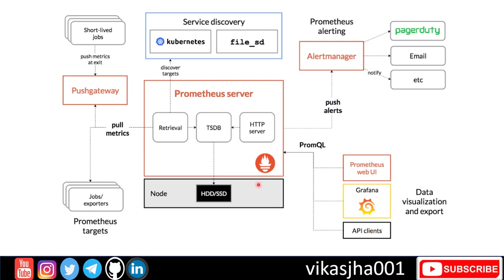Can Prometheus send alerts? Yes — it can send alerts to many different targets such as email, Telegram, PagerDuty, and so on. It uses a component called Alert Manager. When Prometheus identifies a rule or criteria where an alert event has to be triggered, it pushes that alert to Alert Manager, and then Alert Manager is responsible for sending the events to the target notification system. All alerting rules are defined in the Prometheus server configuration file.